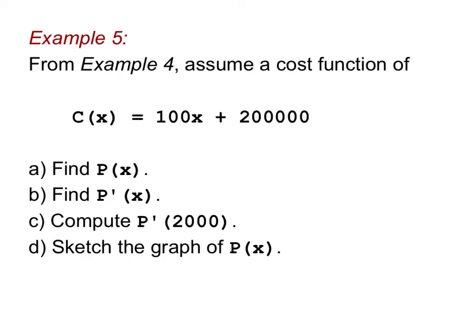So let's get right into an example. From example four, assume the cost function C(x) equals 100x plus 200,000. And we want to find the profit function, the marginal profit function. We're going to plug 2,000 into the marginal profit function, and we're also going to sketch the graph of the profit.